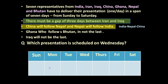If the first five days, say Monday to Friday, are taken by Iran, Iraq, and three more countries, then Ghana and Bhutan cannot be placed together in those slots because India, Nepal, China must be together. So the only possibility is that Bhutan will be on Sunday and Ghana on Monday. Ghana cannot be last, and this is the only possible arrangement — no other position works for Bhutan and Ghana.